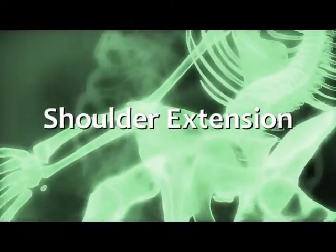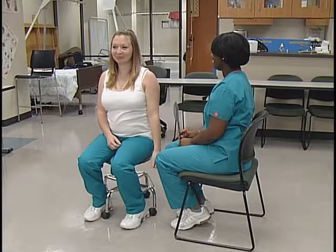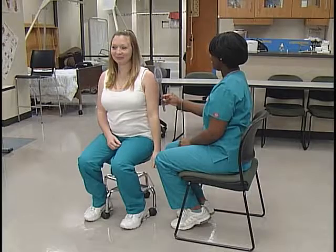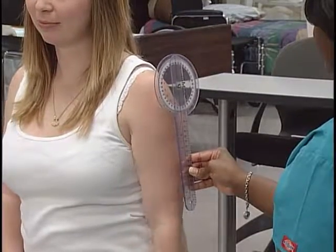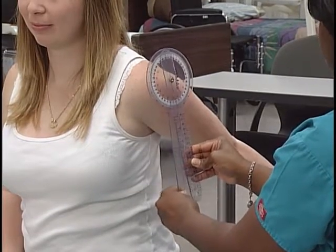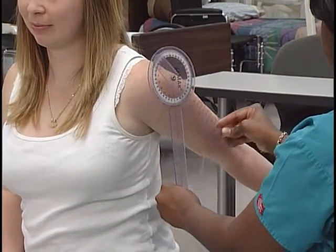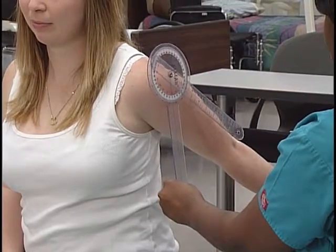For shoulder extension, the subject is seated with no obstruction behind the humerus, and the humerus is in a neutral position. The position of the goniometer is the same as for shoulder flexion. The client's arm is brought in the back of the body in a sagittal plane of movement. The measurement begins at zero degrees and ranges to 60 degrees.